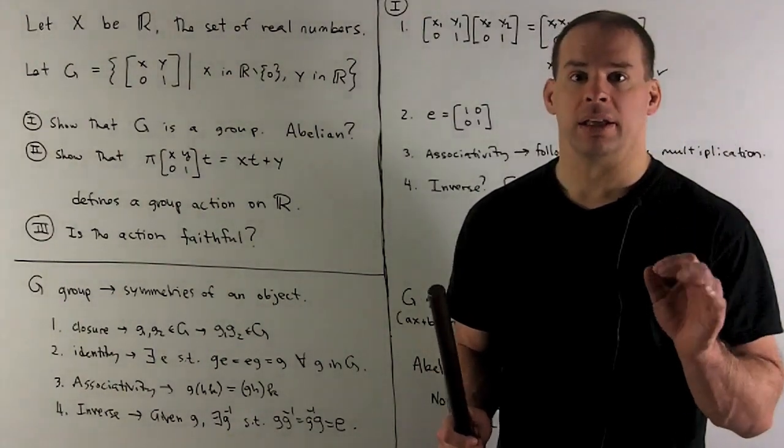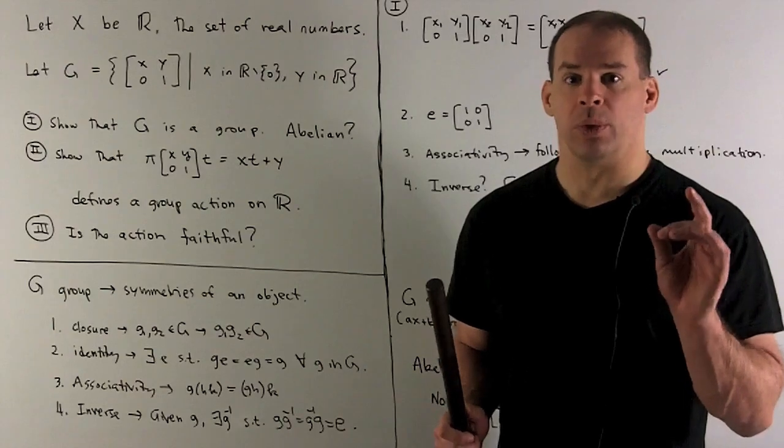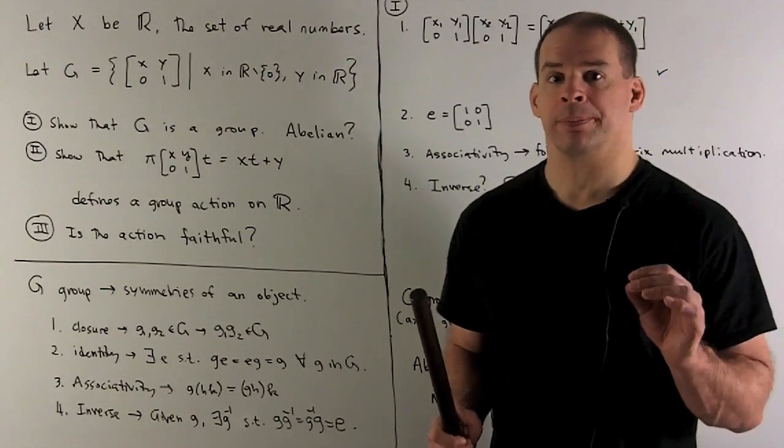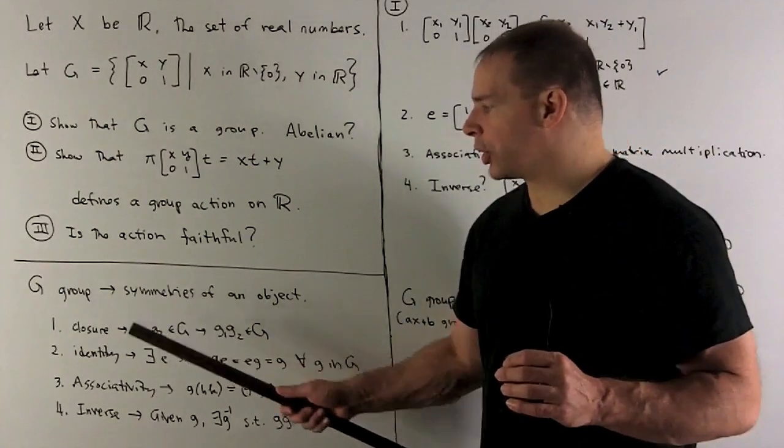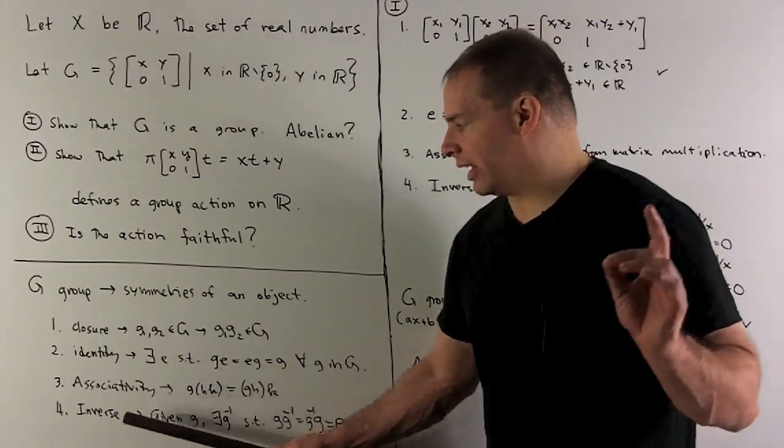Question one: is G a group? So we need to show four things: closure, identity, associativity, and inverse.